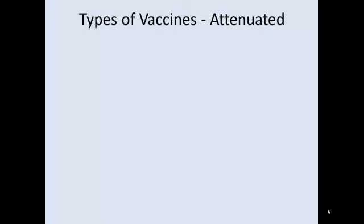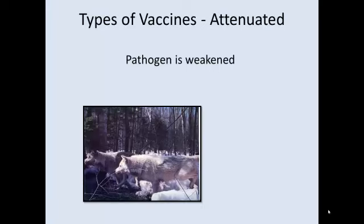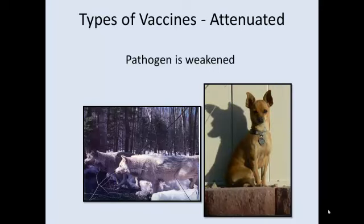Attenuated vaccines are also called live vaccines — the pathogen is weakened but still active, still alive when we inject it into you. I'm going to use an analogy of the domestication of dogs. Dogs originally came from wolves — mean, able to hunt and bring down their own food. After thousands of years of domestication, we have Sadie the Chihuahua. If you dropped Sadie into the woods in the snow, she would last maybe a day. This is kind of what we've done with attenuated vaccines.